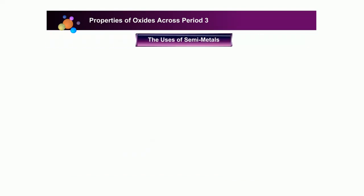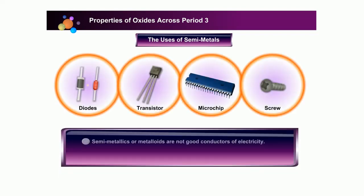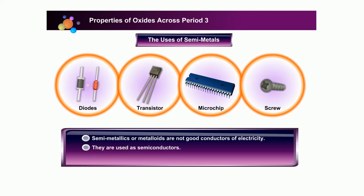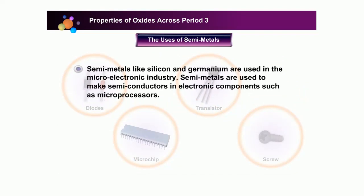The uses of semi-metals. We have seen the properties of elements in period 3. Some of these elements are metallic and semi-metallic. Semi-metallics or metalloids are not good conductors of electricity. They are used as semi-conductors. Semi-conductors are used for making something useful. Semi-metals like silicon and germanium are used in the micro-electronic industry. Semi-metals are used to make semi-conductors in electronic components such as microprocessors.